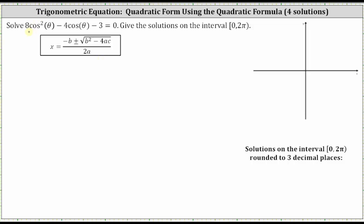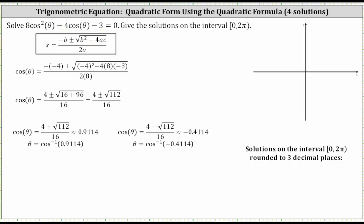Applying the quadratic formula, notice a is equal to eight, b is equal to negative four, and c is equal to negative three. When applying the quadratic formula, instead of x on the left, we will have cosine theta. I've already performed these substitutions to save some time. Simplifying, we have cosine theta is equal to the quantity four plus or minus the square root of 112, all divided by 16.